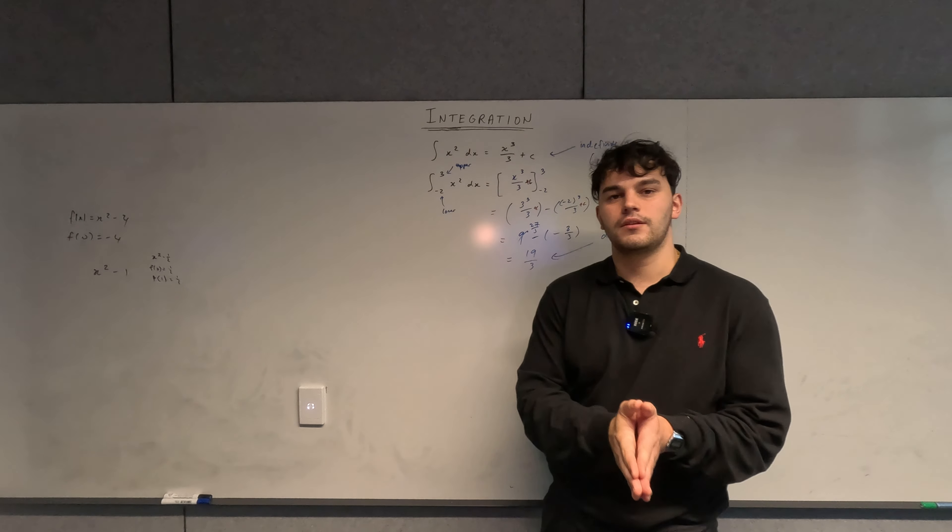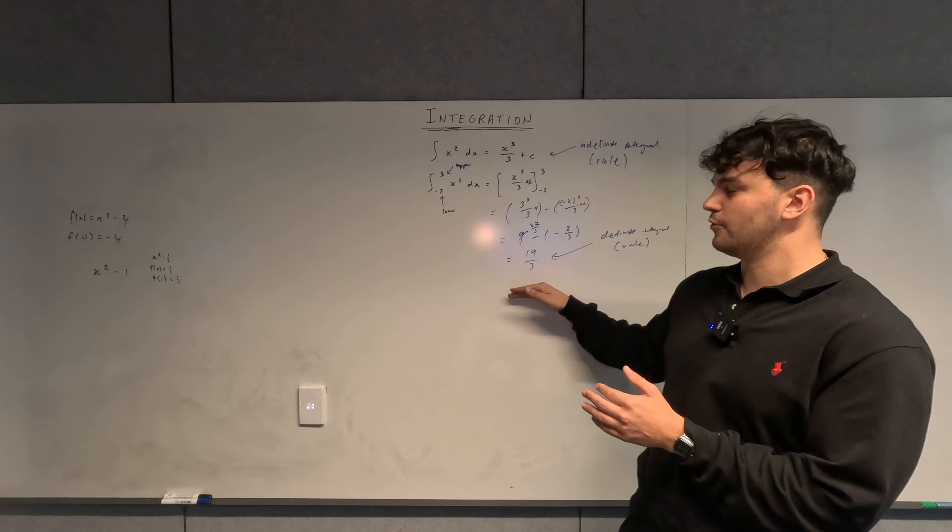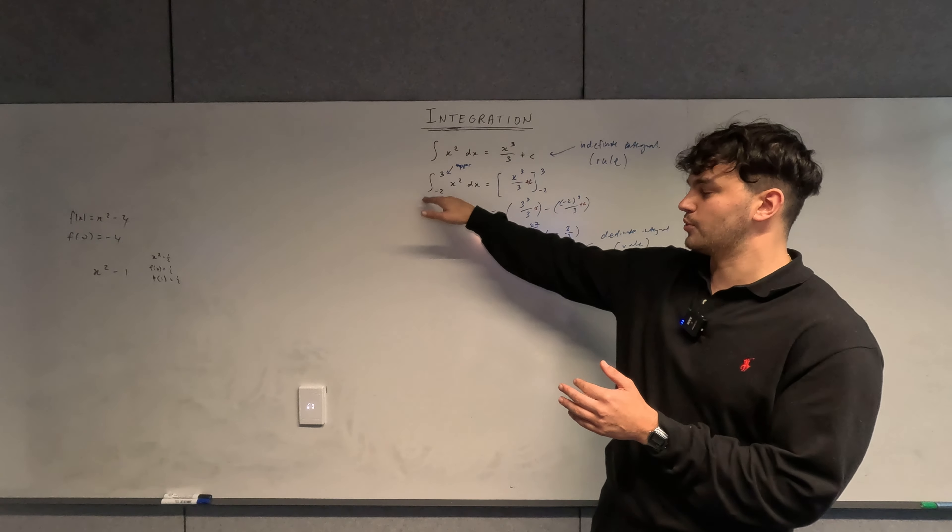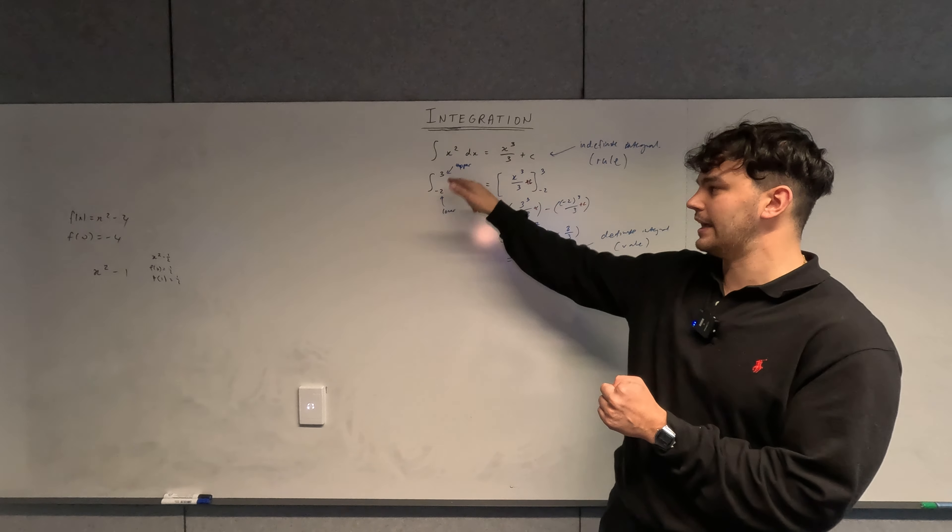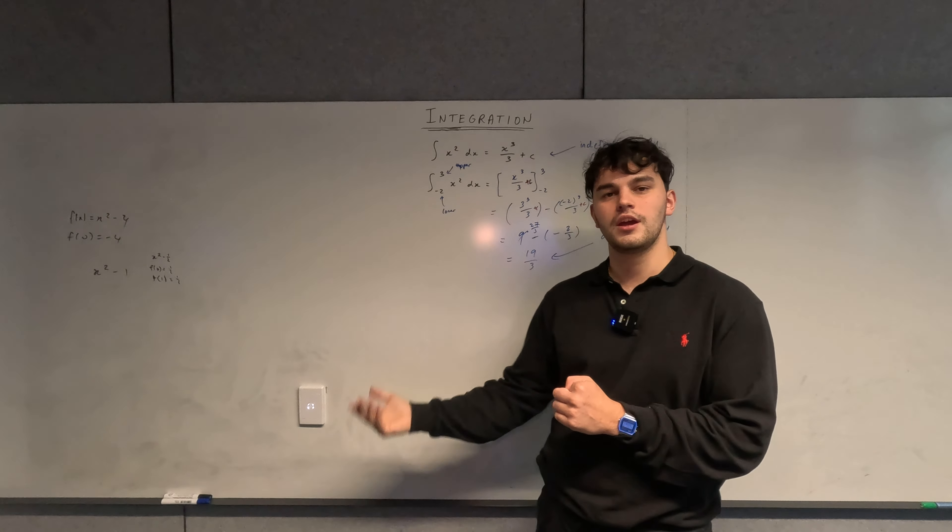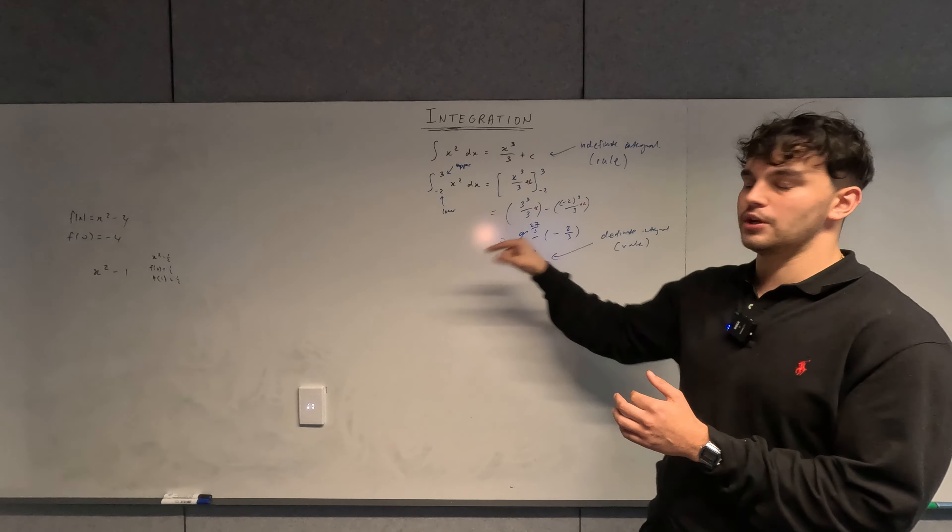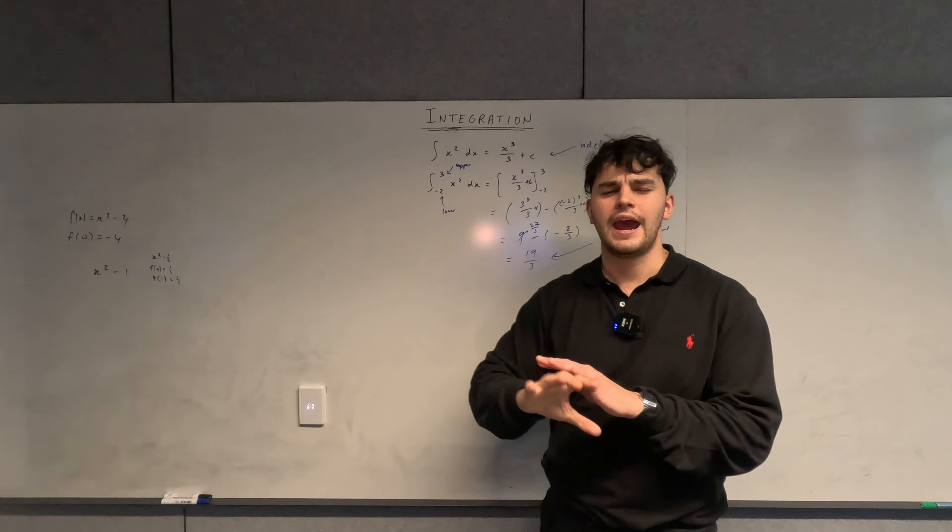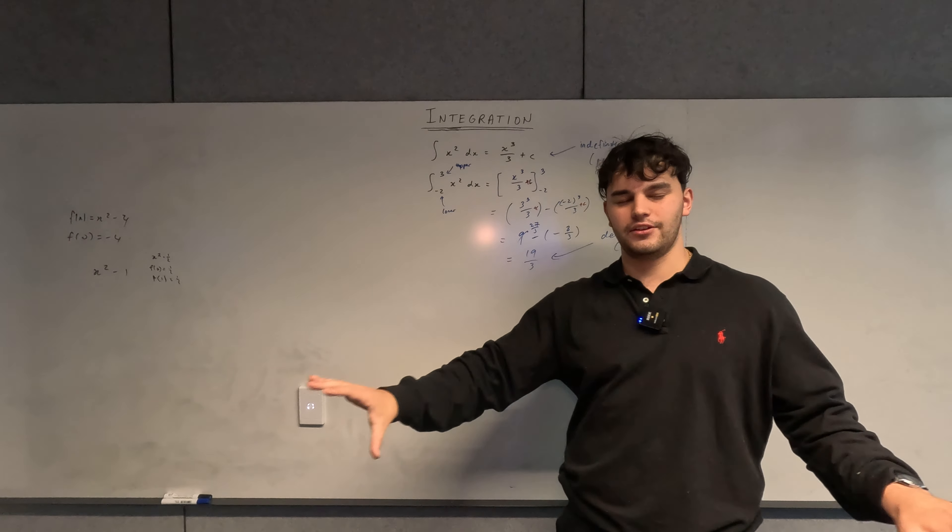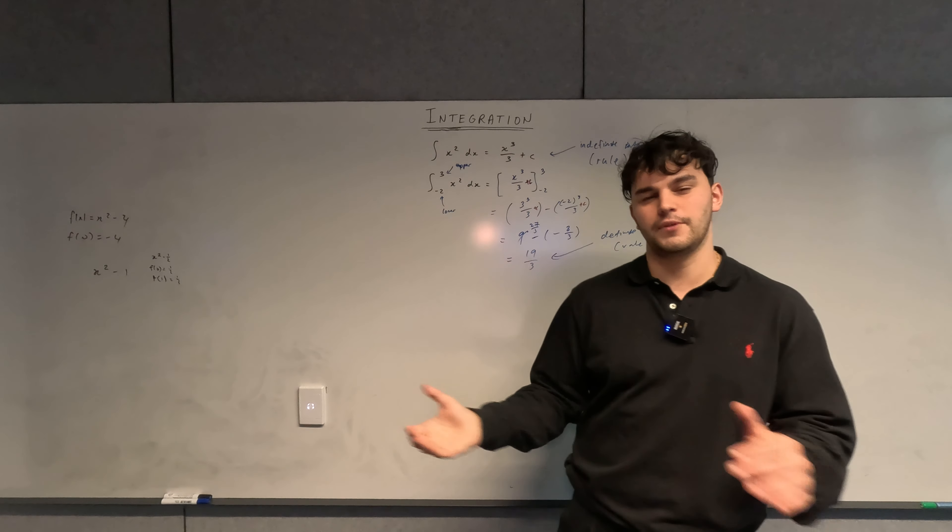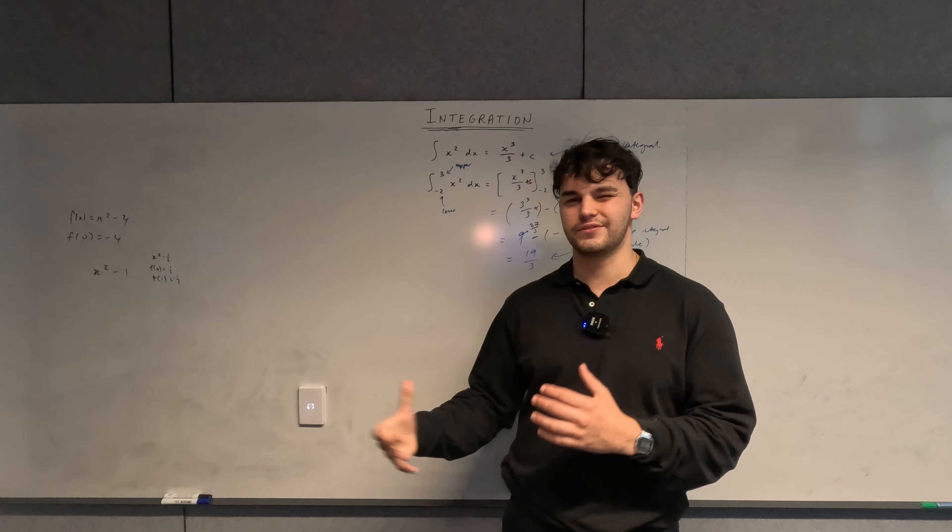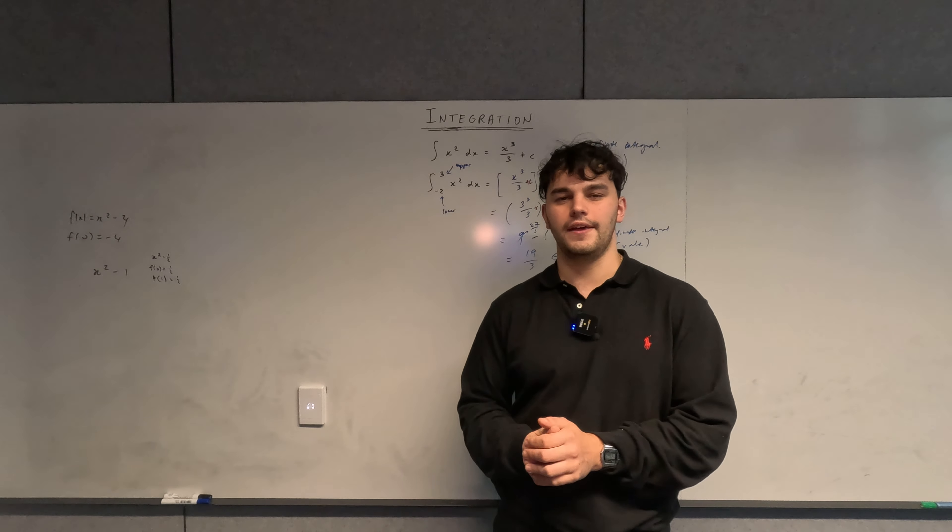Now that's actually not correct because this is not specifically asking for an area. This is just saying to calculate the integral from negative 2 to 3 or the definite integral from negative 2 to 3. So it's actually not correct if you write unit squared when you're not specifically calculating the area. I just wanted to separate that out into two separate ideas before we move on to area and before we start to confuse them and blur those two topics together.